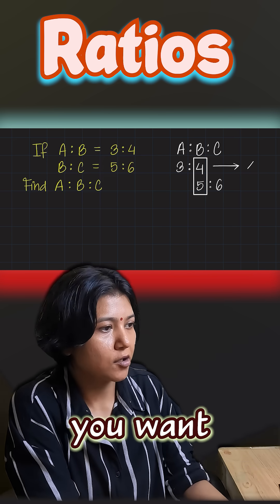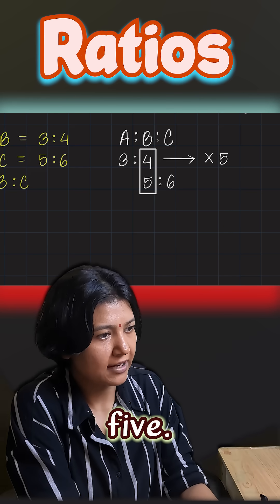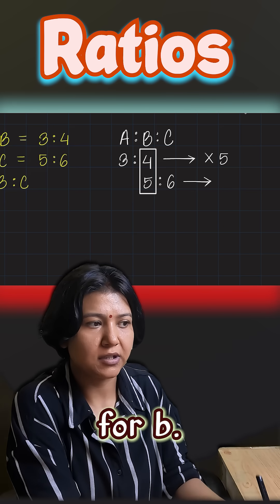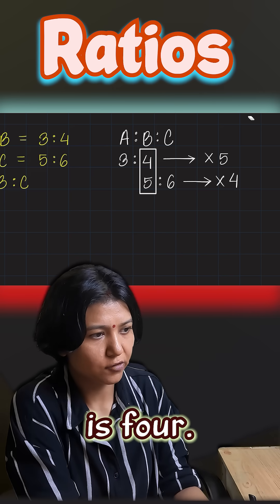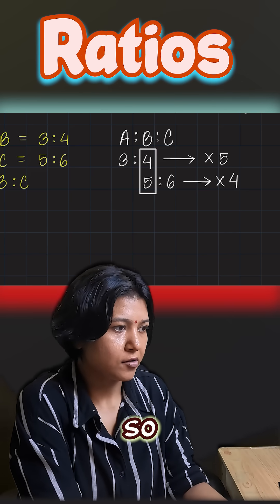So you want to multiply the first ratio with five, that's the opposite value for b, and you want to multiply the second ratio by the previous value of b which is four. So when you do so, then your ratio becomes...